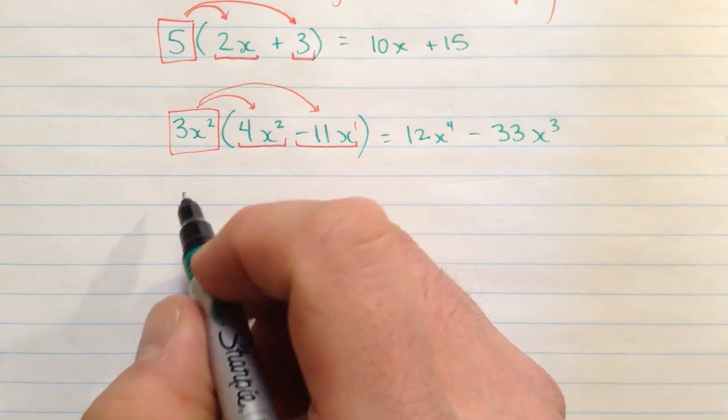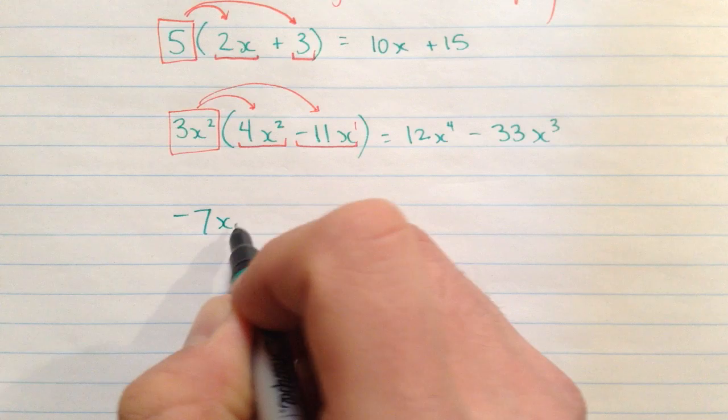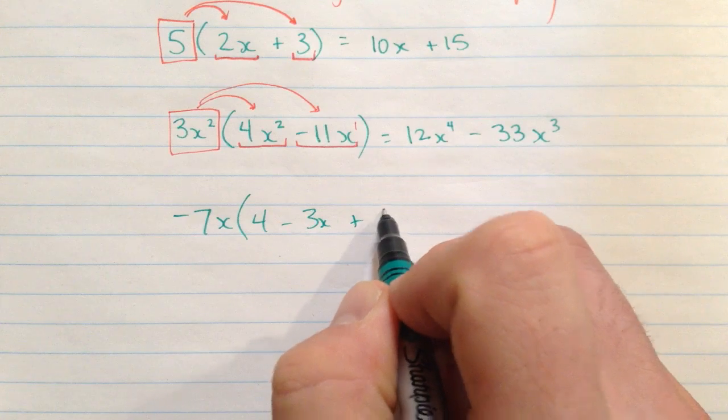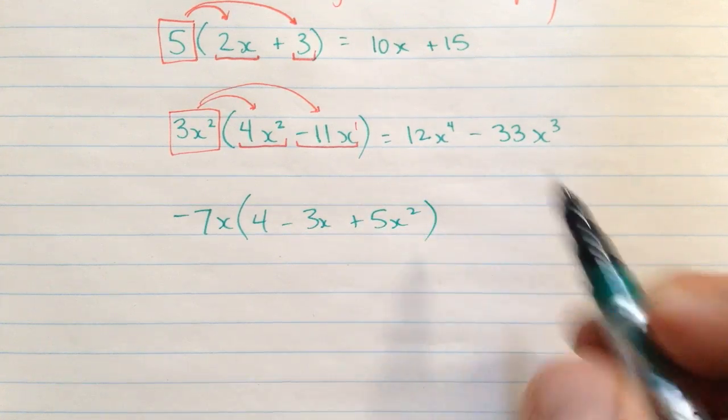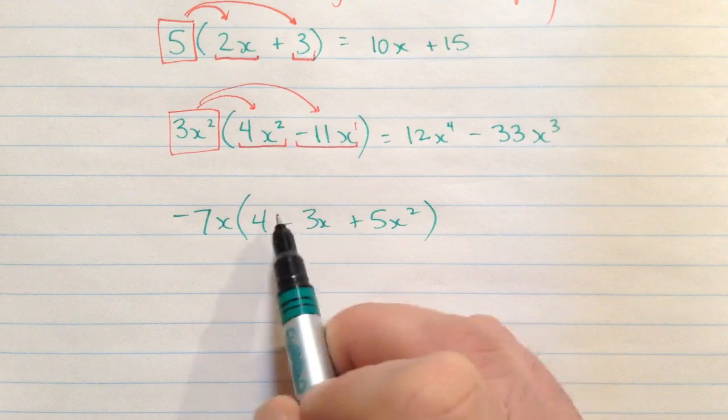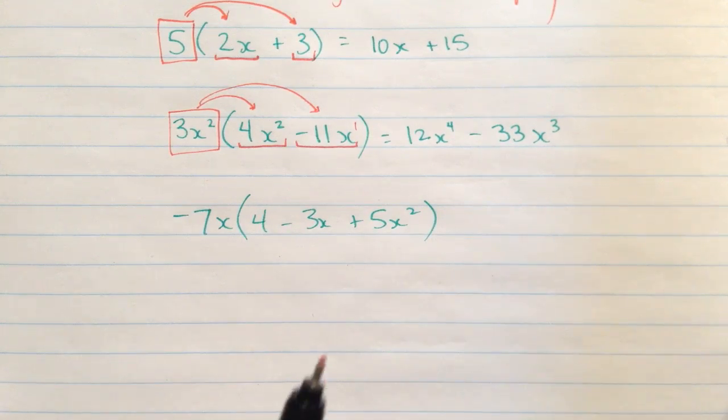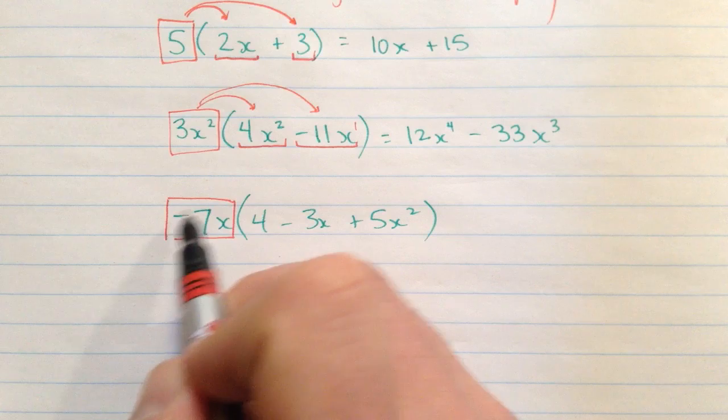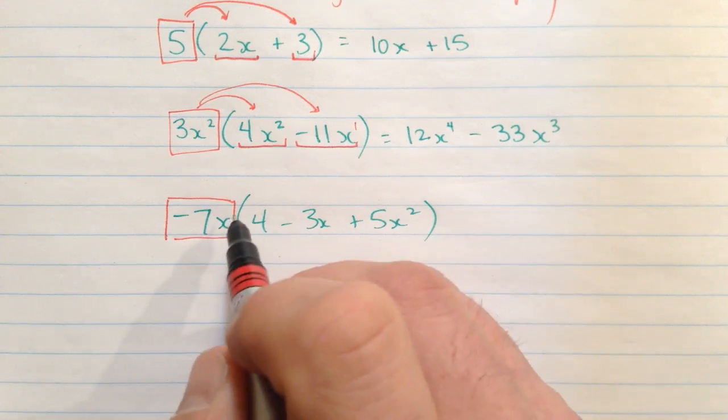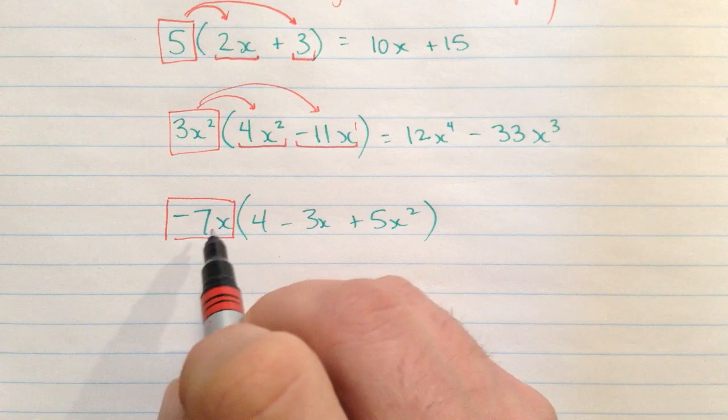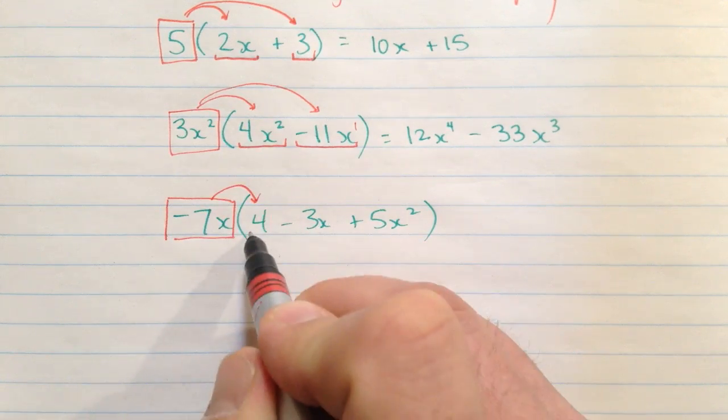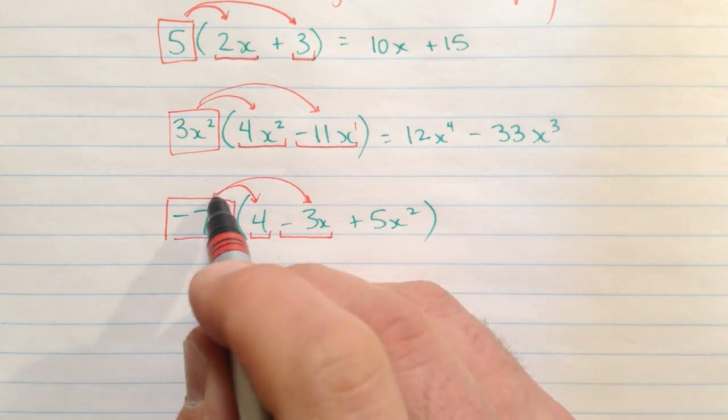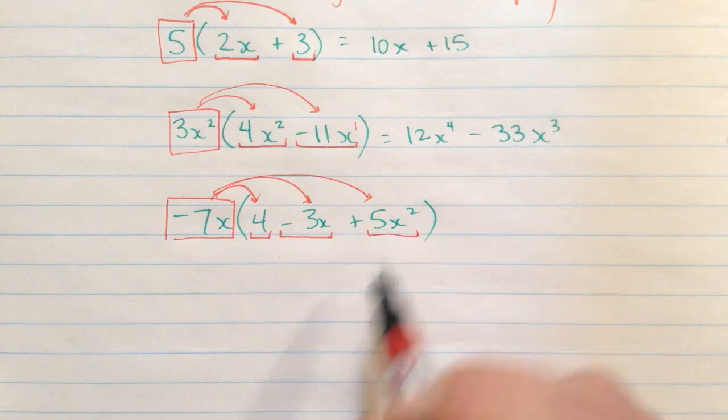Okay, how about, let's put a negative in here. Negative 7x times 4 minus 3x plus 5x squared. Okay, now this is a trinomial. It has three separate terms, but that's fine. The same rules apply. And be careful with this minus sign. It needs to be part of what you're multiplying by. This is negative 7x, not just 7x. Let's multiply by the first term, which is 4, by the second term, which is negative 3x, and also by the third term, which is positive 5x squared.